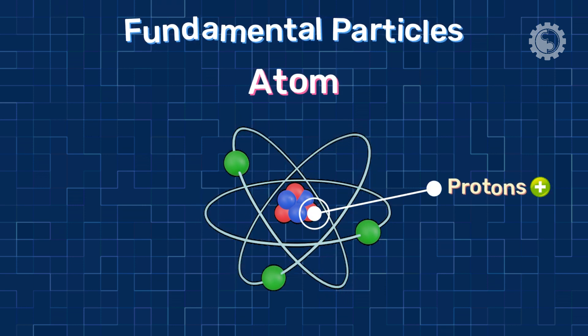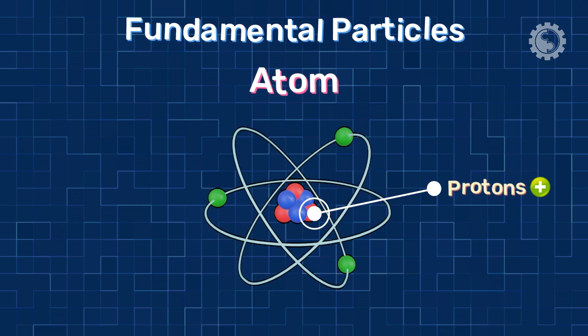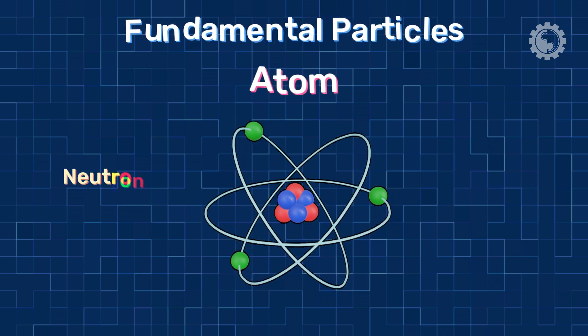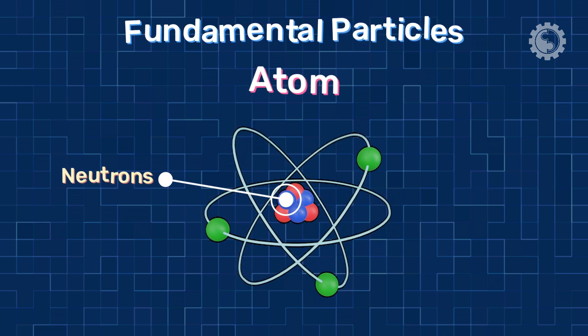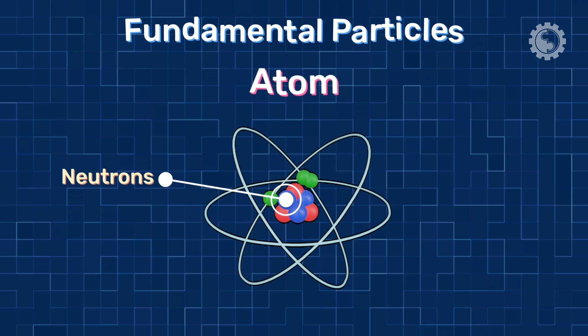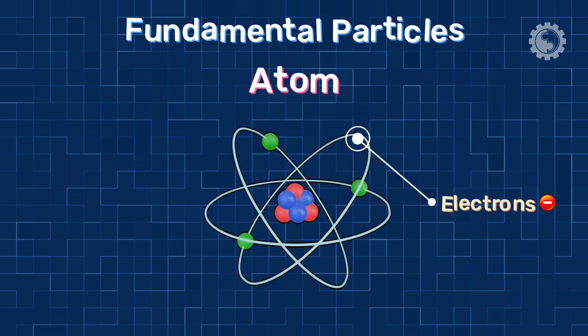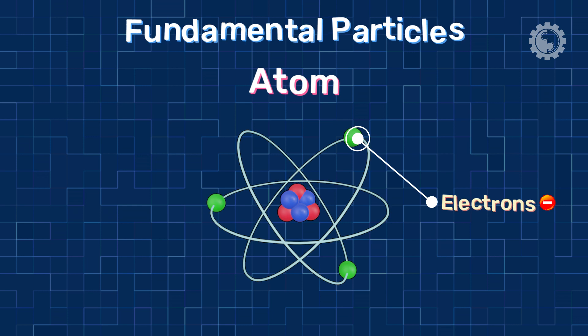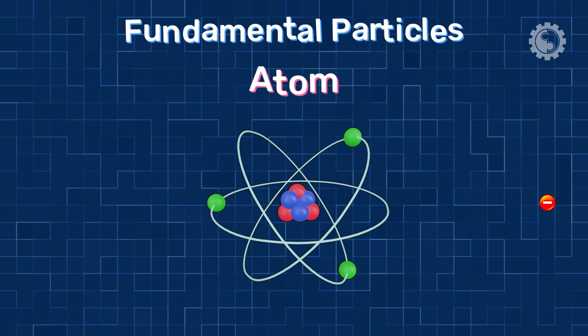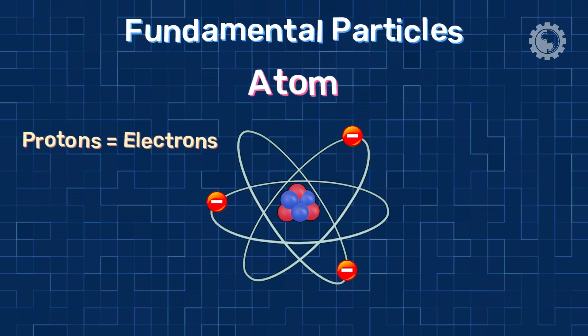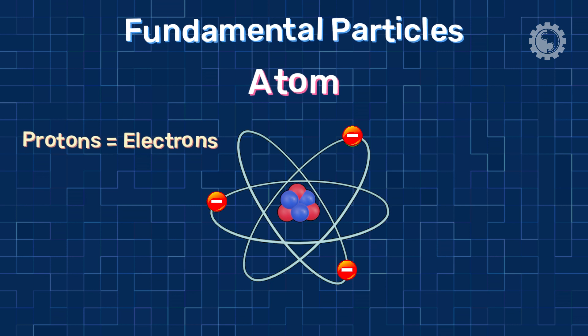Protons are positively charged particles that are found in the nucleus of the atom. Neutrons are neutral particles that are also found in the nucleus of the atom. Electrons are negatively charged particles that orbit the nucleus of the atom. An atom naturally has an equal number of protons and electrons, so it's in balance.